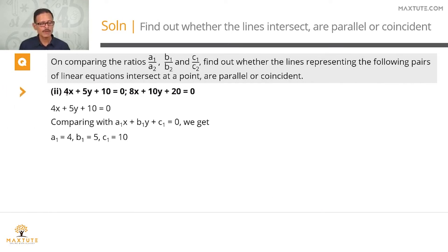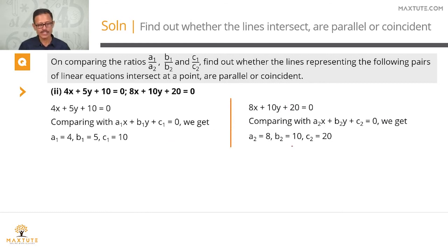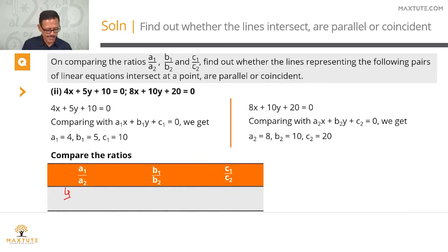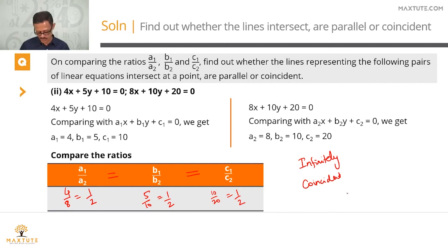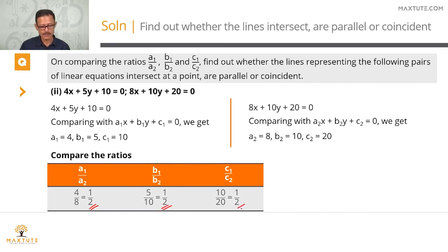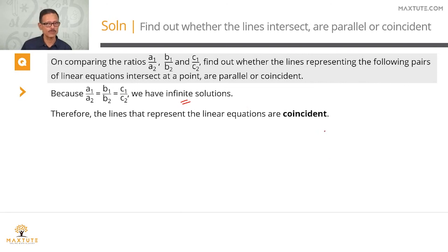For the second pair — 4x plus 5y plus 10 equals 0 and 8x plus 10y plus 20 equals 0 — a1 by a2 is 4 upon 8 equals 1 by 2, b1 by b2 is 5 upon 10 equals 1 by 2, and c1 by c2 is 10 upon 20 equals 1 by 2. Since a1 by a2 equals b1 by b2 equals c1 by c2, this gives infinitely many solutions. These are coincident lines; the second equation is two times the first.